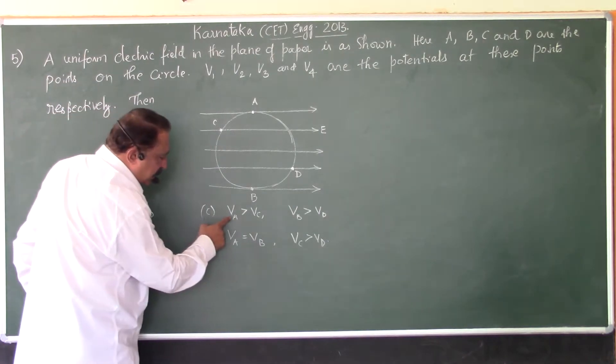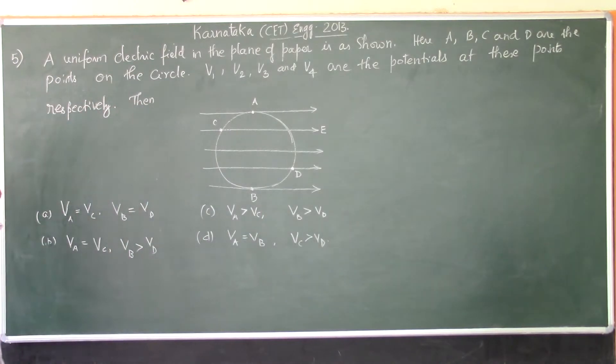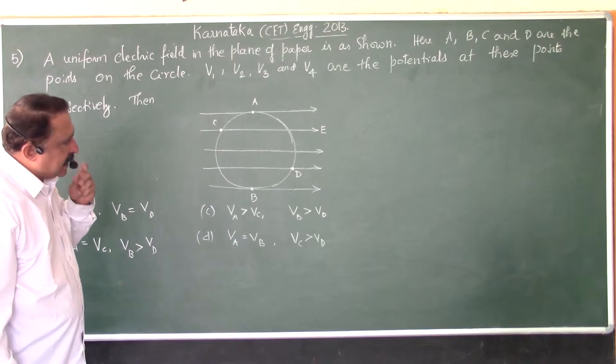Option C, VA is greater than VC, VB is greater than VD. And D is VA equals VB, VC is greater than VD.